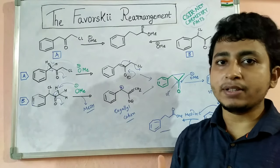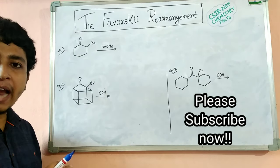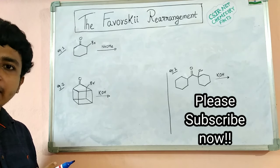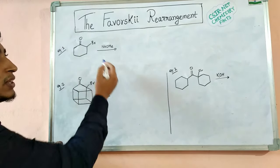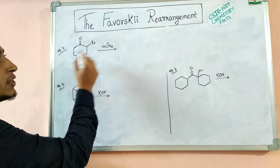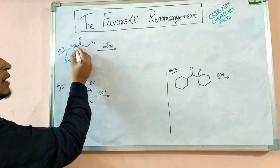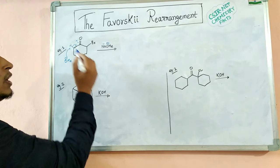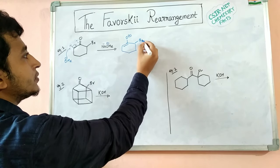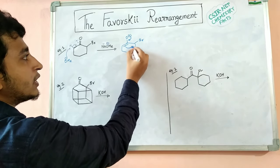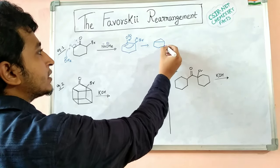We will discuss a few examples related to the Favorskii Rearrangement; these are very important for CSIR NET, GATE, IIT JAM and other competitive exams. In the first example, a cyclic alpha-haloketone is treated with NaOMe base. The OMe⁻ searches for the acidic proton, abstracts it, the electron pair comes here, and this bond opens up — forming an enolate. The negative charge then comes back, attacks here, and Br⁻ leaves. So a three-membered cyclic ketone intermediate forms.